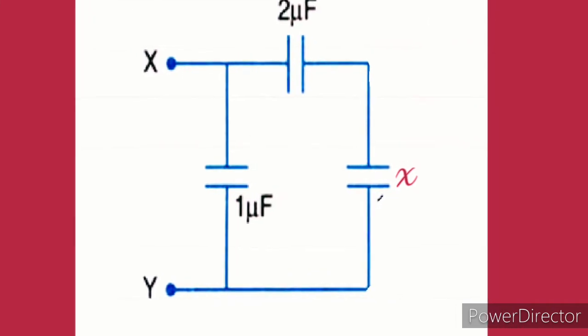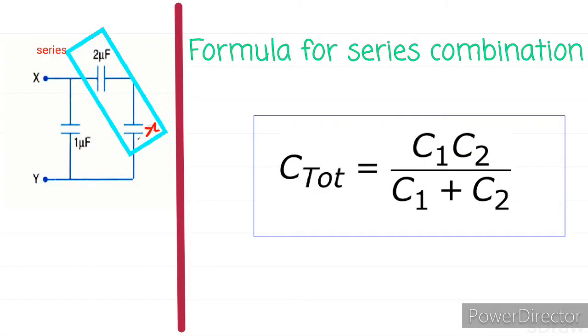Let us now consider the circuit diagram. According to the observation, we see that x and 2 microfarad capacitor are in series. The formula for series network of two capacitors is C1 times C2 divided by C1 plus C2.